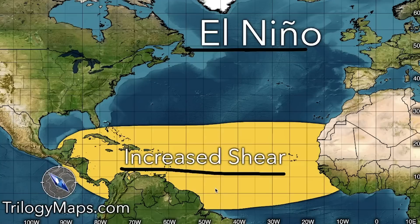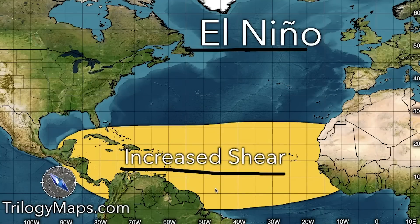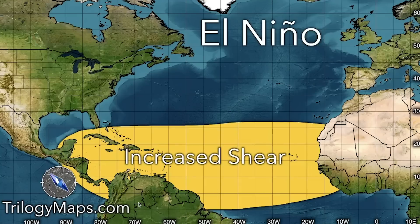We do expect increased wind shear with El Niño. Shear means wind speeds are occurring at different speeds throughout the lower atmospheric layers where clouds and storms develop. What we expect is that the tops of storms get disrupted because things are moving so much faster at 15,000 to 30,000 feet, keeping these storms from developing tall clouds — which is a key detail in storm intensification.